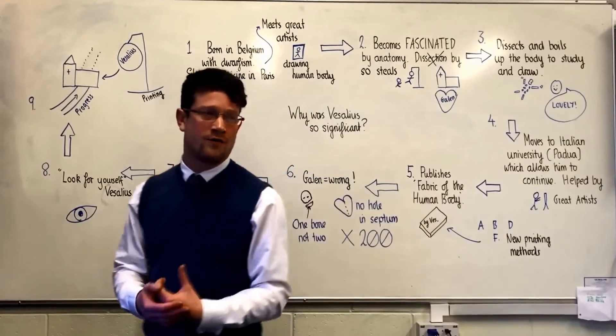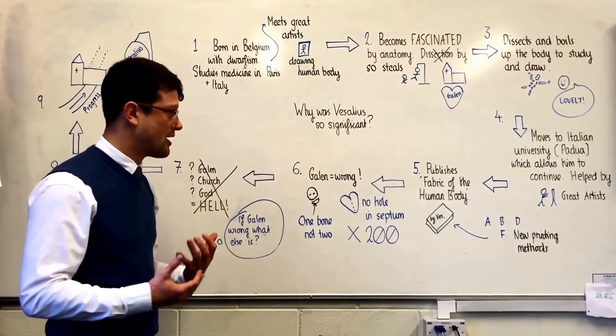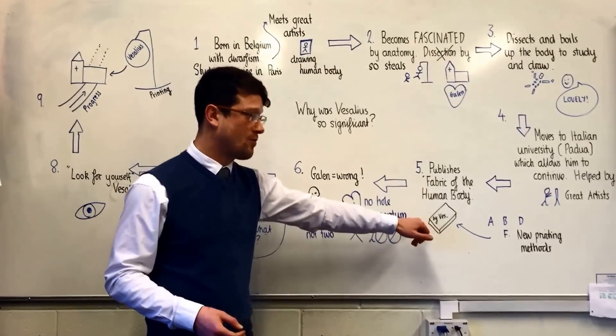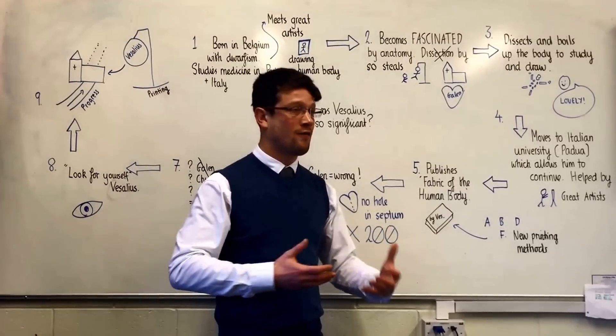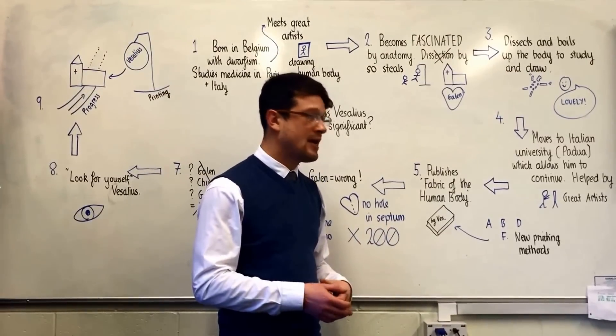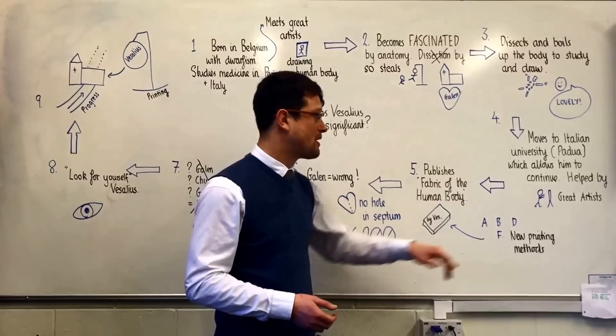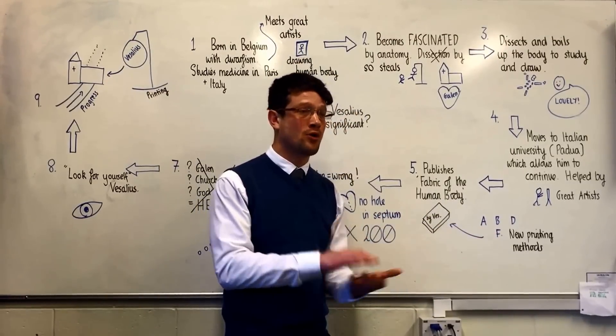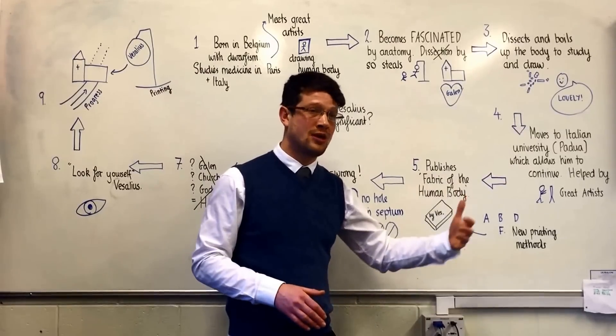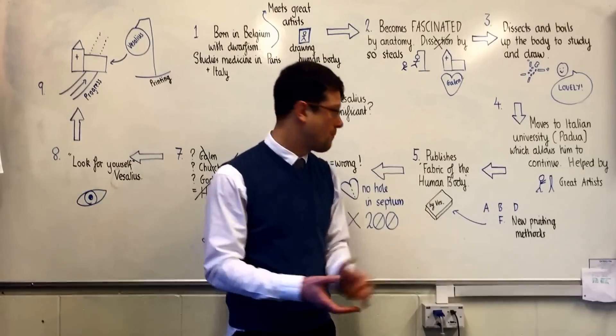The result of all of this work is the groundbreaking atlas of the human body called the fabric of the human body. Now this book is a comprehensive survey of the human body and how it fits together and Vesalius is able to distribute it over a wide range because of new printing methods which means that for the first time books can be mass produced whereas a hundred years before they would have had to have been copied out by hand which meant few copies could have been produced.